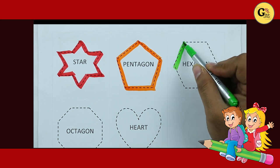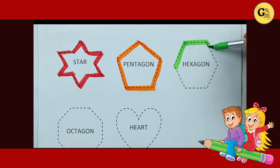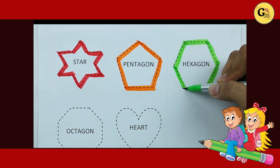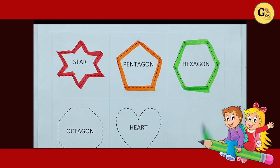Hexagon: one line, two line, three line, four line, five line, six line. It's a hexagon.